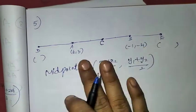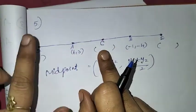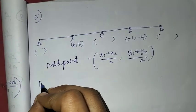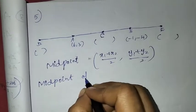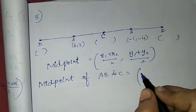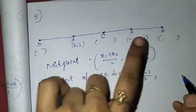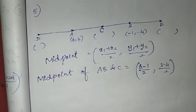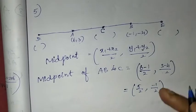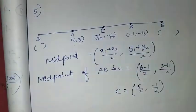First, we find the midpoint of AB. The midpoint of AB is C. Using the formula with A(6,3) and B(-1,-4), the midpoint C = (6 + (-1))/2, (3 + (-4))/2 = 5/2, -1/2.